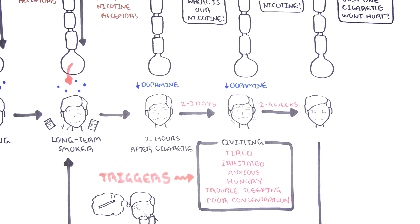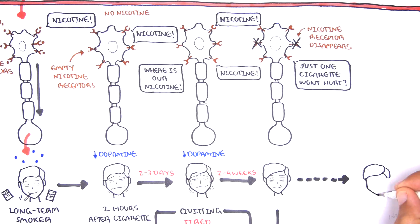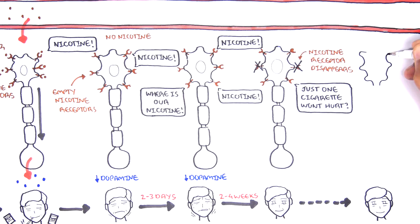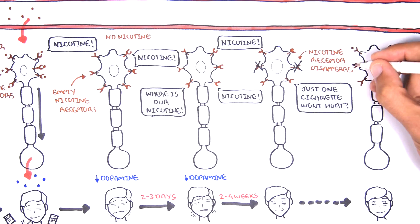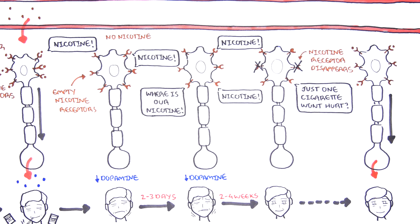Really strong cravings can be managed with the help of nicotine replacement therapy products. NRT binds to nicotine receptors in just the right amounts to release dopamine to help with the cravings.